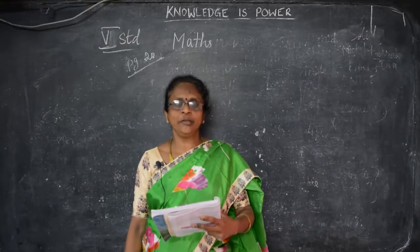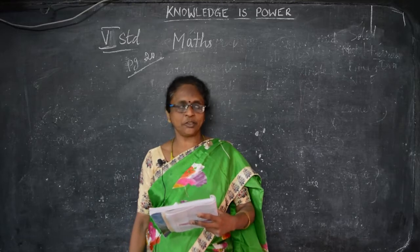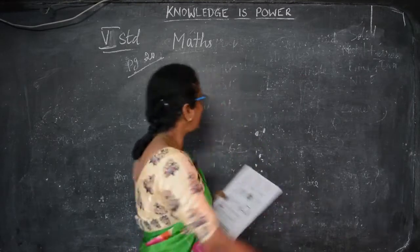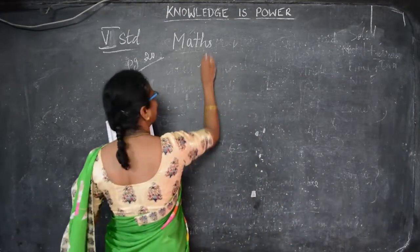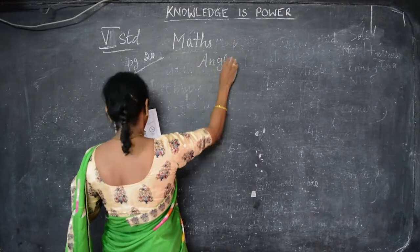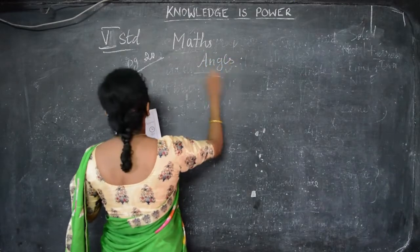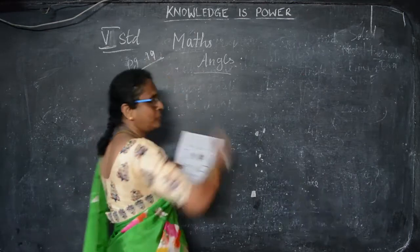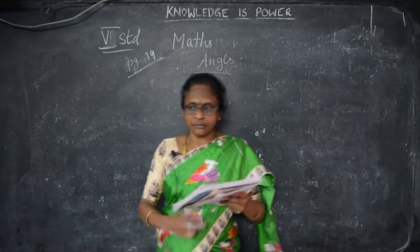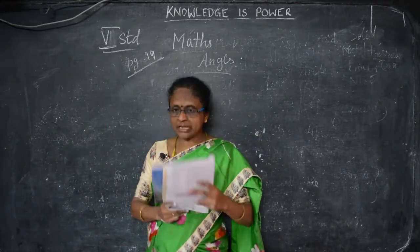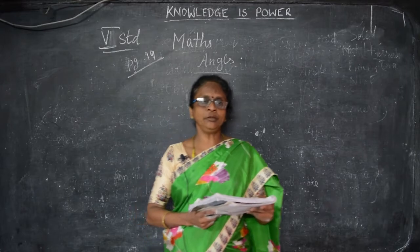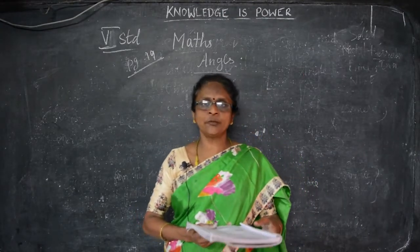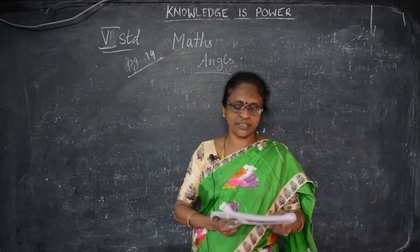Okay children, now we are going to see about the fifth angle chapter, about the continuation of the angles and the types of angles we are going to see now. So now page number 19, you can take your book children. Those who are not having the book, just get it from the school by paying the fees children.